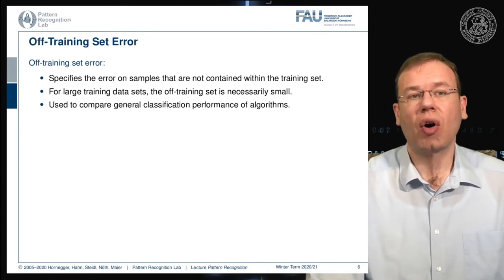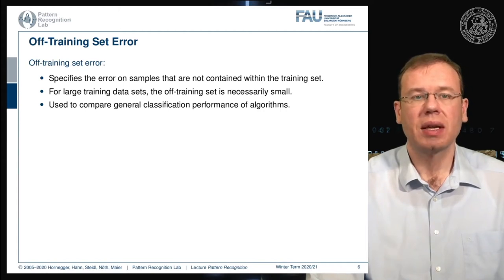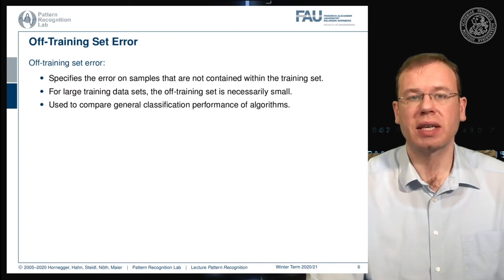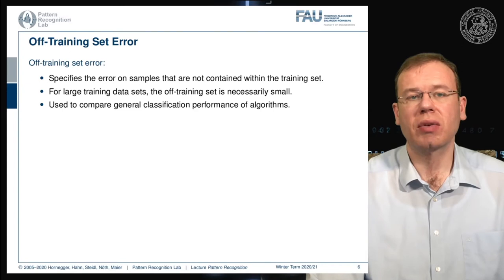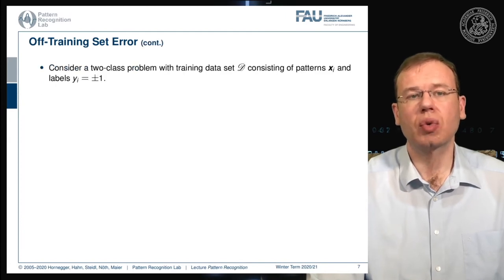If we consider the off-training-set error, we are able to measure the performance outside the data seen during training. This is very relevant for measuring performance on unseen data samples. We need to compute the error on samples not contained in the training set. For large training sets, the off-training error should be small, and we use it to compare the general classification performance of algorithms for a particular problem.